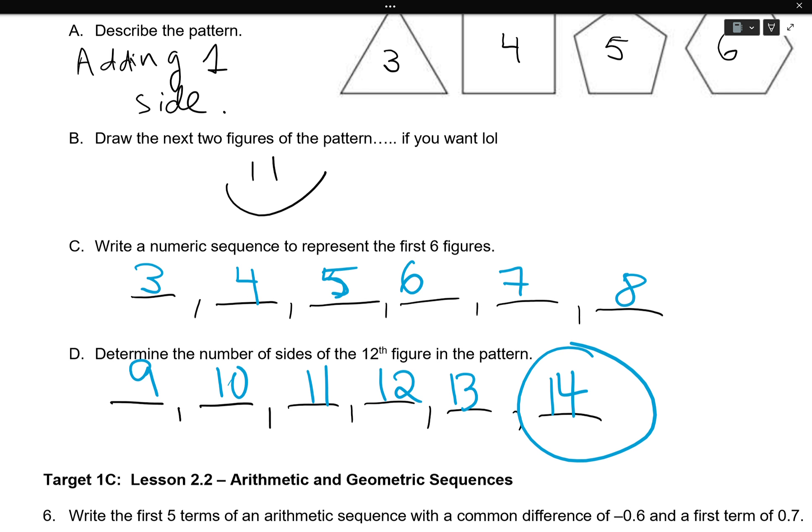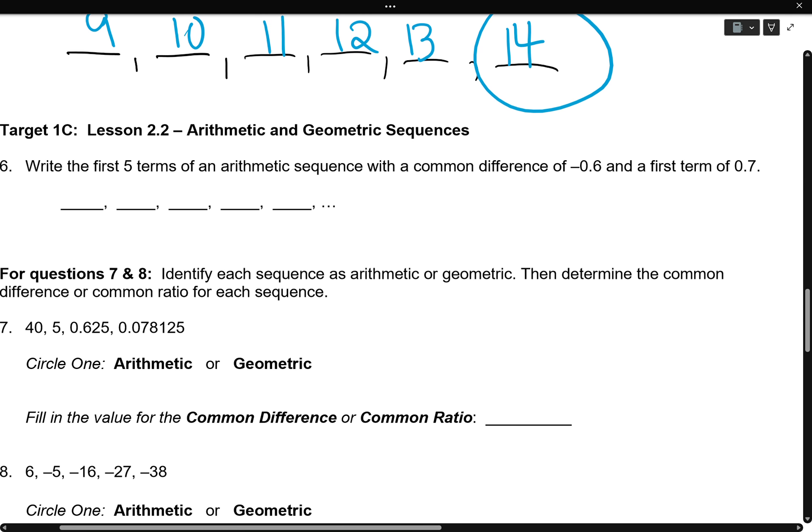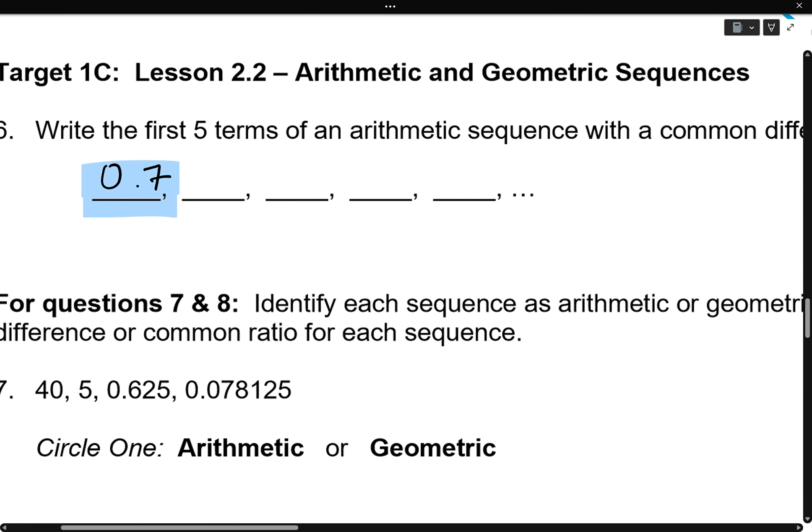Alright. Target one C. We're going to write the first five terms with a common difference of negative 0.6 and the first term of 0.7. So, 0.7 is my first term. So it goes right here. 0.7. Minus 0.6 is my pattern. So I am going to subtract 0.6 between every number. Let's do it. 0.1. Negative 0.5. Negative 1.1. And negative 1.7.